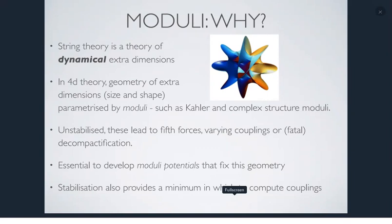If you don't give moduli a potential, they are phenomenologically disastrous. If they are light and massless, they lead to fifth forces, varying couplings, and decompactification — if an unstabilized field tends to make extra dimensions larger, it can run away to a 10-dimensional vacuum. So if you care about connecting string theory to observable physics, you have to develop potentials for these moduli fields that fix the geometry, give the scalars a mass, and fix them at particular vevs.